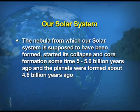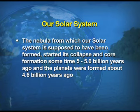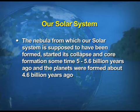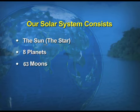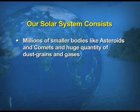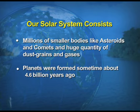Now let us have a look at the formation of the solar system. The nebula from which our solar system is supposed to have formed started its collapse and co-formation sometime five to five point six billion years ago, and the planets were formed about four point six billion years ago.